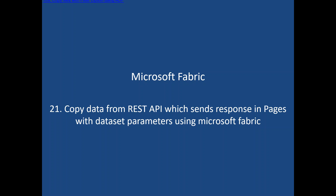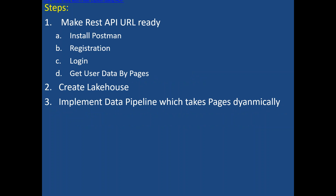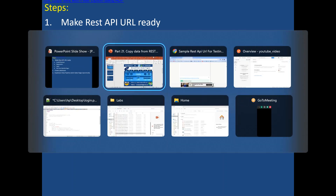If I pass a page ID 5, it has to fetch the data from page ID 5. If I pass a page ID range from 1 to 10, it has to fetch data from page ID 1, then page ID 2, then page ID 3, and so on up to 10. Let's see how you can do this. First we need to make the REST API URL ready. We need to install Postman, register, and log in. I'll show you how to log in and how to get user data by pages within Postman now.